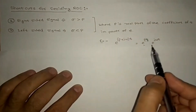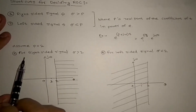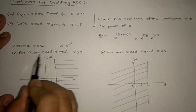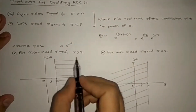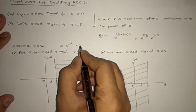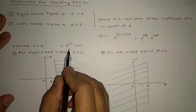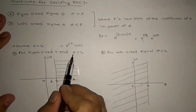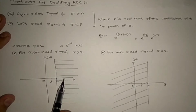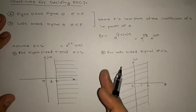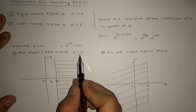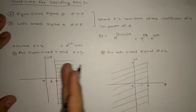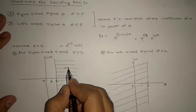Let us see some examples. Assume p equals 2, so the signal is e^(2t). For a right-sided signal, assume this is e(t). For this right-sided signal, σ is greater than 2. So right-sided signal has right-side ROC. This 2 is directly used, and σ greater than 2 means this is completely the ROC.